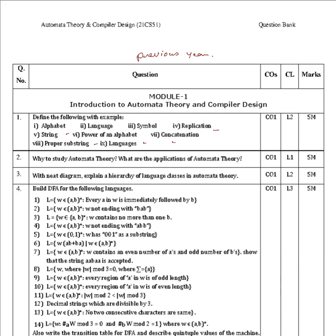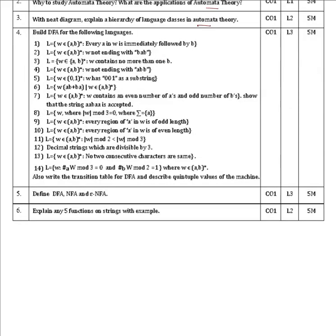With a neat diagram, explain the hierarchy of language classes in automata theory. For this you should explain the Chomsky hierarchy — all four different kinds of languages: Type 0, Type 1, Type 2, and Type 3.